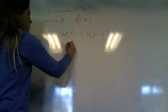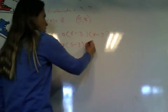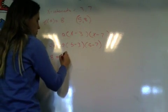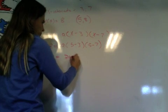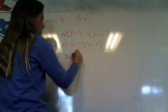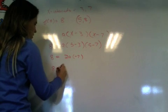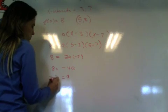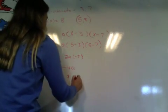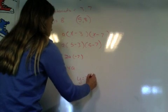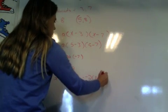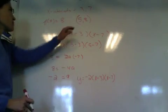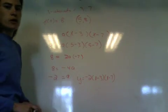So 8 equals a times (5 minus 3) times (5 minus 7). So 8 equals 2a times negative 2. So 8 equals negative 4a. So a equals negative 2. So then the equation would be y equals negative 2 times (x minus 3) times (x minus 7). This was given, f(5) equals 8.